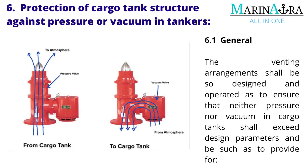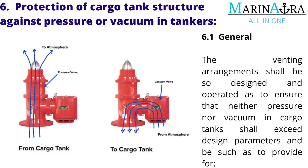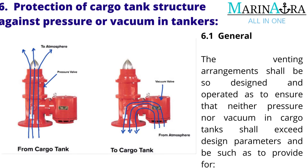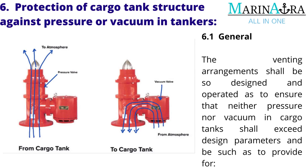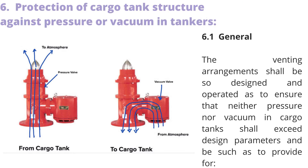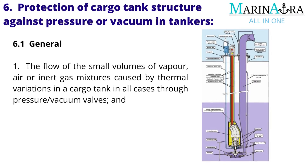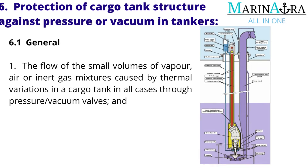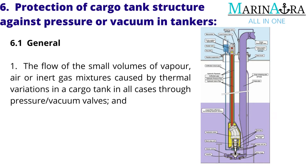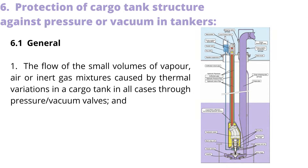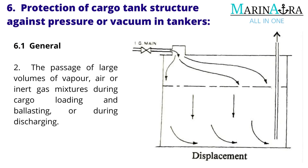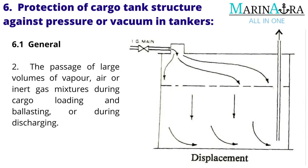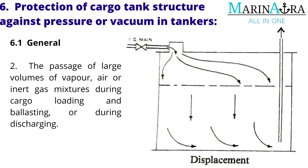Protection of cargo tank structure against pressure or vacuum in tankers. General: the venting arrangements shall be so designed and operated as to ensure that neither pressure nor vacuum in cargo tanks shall exceed design parameters, and be such as to provide for the flow of small volumes of vapor, air, or inert gas mixtures caused by thermal variations in a cargo tank — in all cases through pressure/vacuum valves — and the passage of large volumes of vapor, air, or inert gas mixtures during cargo loading and ballasting, or during discharging.